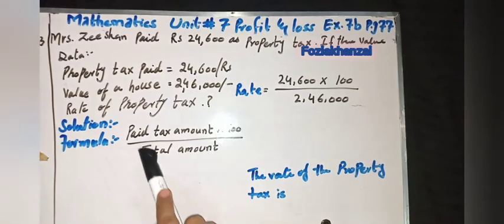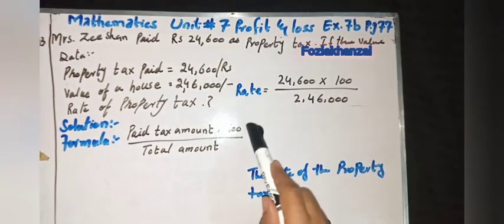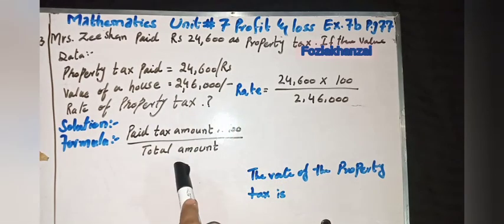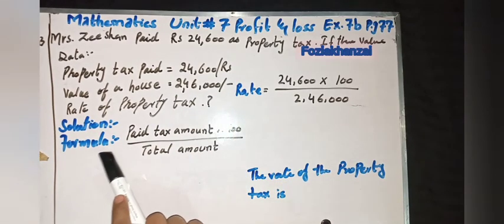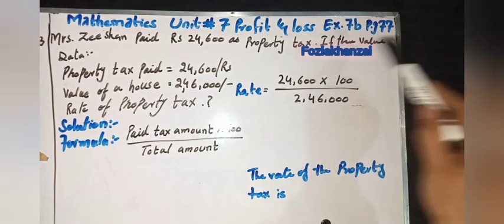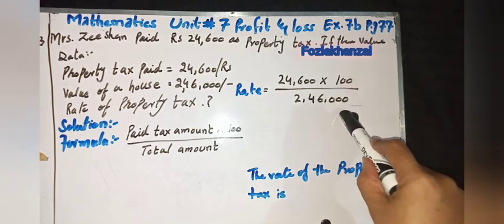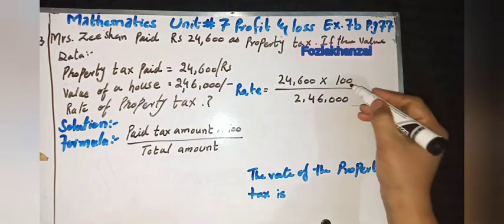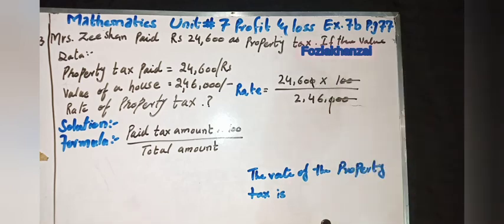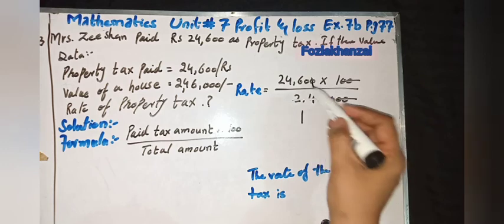Now the formula: paid tax amount multiply by 100 upon total amount, which means the value of the house. This is the formula for rate. According to the formula, put the values: 24,600 rupees multiply by 100 upon total value of the house, 2 lakh 46,000 rupees. Simple: reduce it. Two zeros cut with two zeros, one zero cut with one zero. 246 ones are 246.